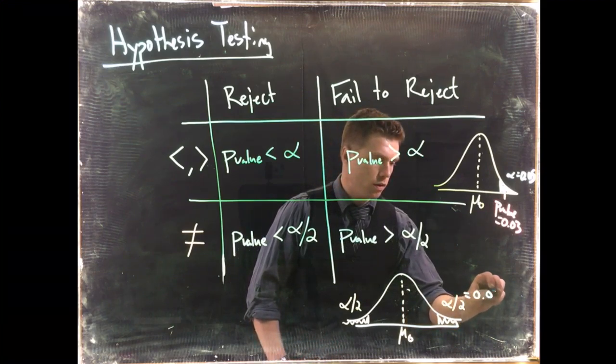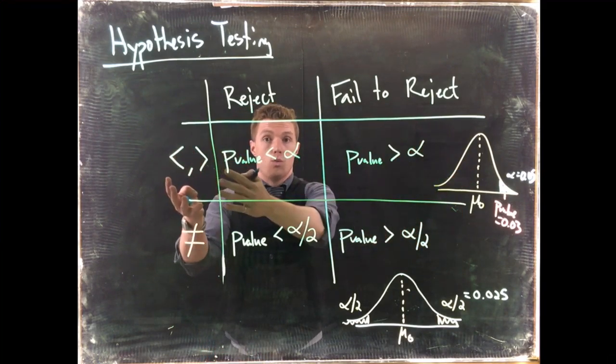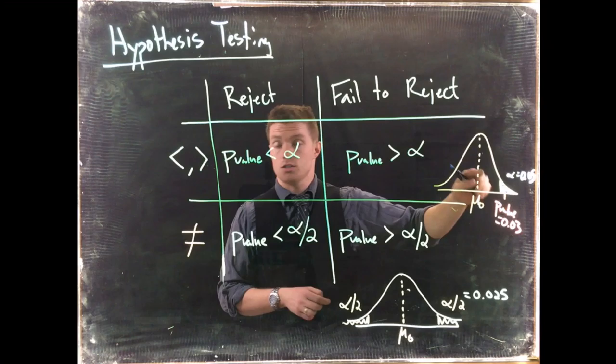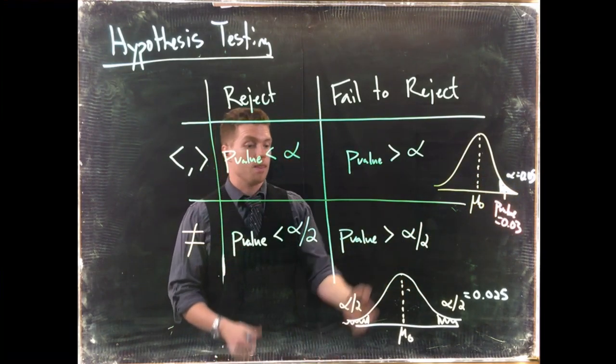If we still are testing with an alpha of 0.05, then this would be 0.025. Let's do this exact same test, only instead of it being a one tail test. In the one tail test we rejected because our alpha was 0.05 and our p-value was 0.03, so our p-value was less than alpha.